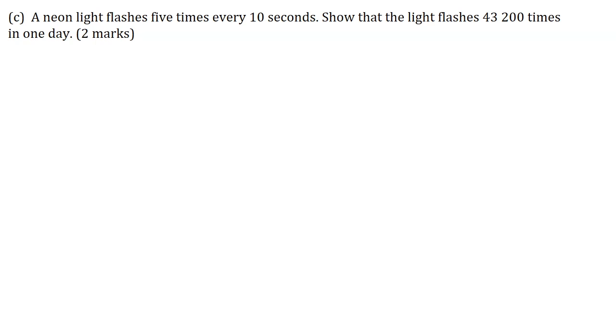Part C: A neon light flashes 5 times every 10 seconds. Show that the light flashes 43,200 times in one day for two marks. The first thing I need you to note here is that show means to prove. They want us here to prove mathematically that there are 43,200 flashes in one day. I am going to start off by looking at the statement here. The light flashes here 5 times every 10 seconds. So I could write here 5T is equal to 10 seconds. Therefore, T is equal to 2 seconds.